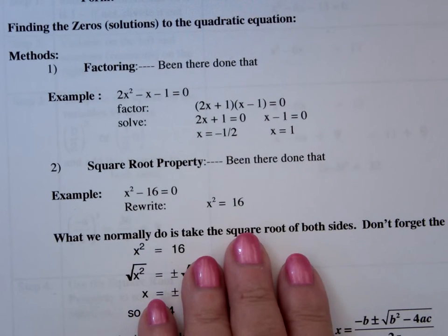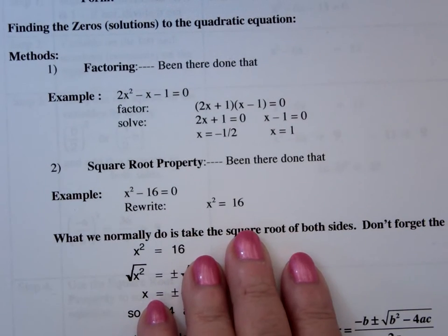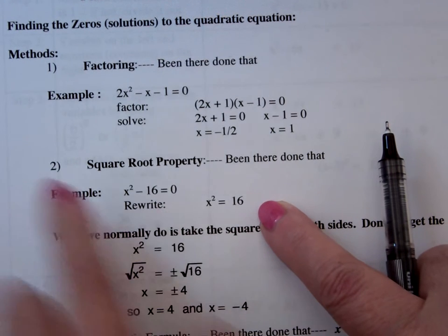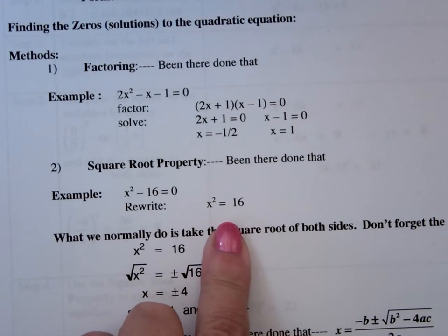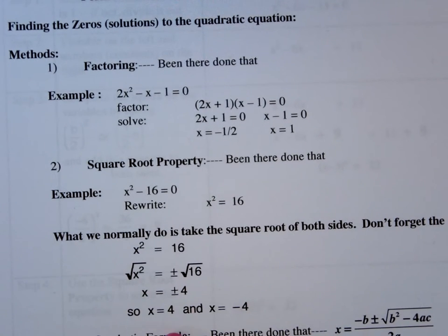The square root property. Now that's where you don't have any b term. So in other words, what you have is a squared term and a constant. You can throw the constant to the other side. Use the square root property. Then you take the square root of both sides. Don't forget the plus or minus. And then solve for x.